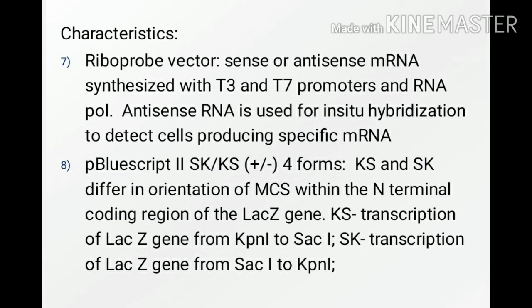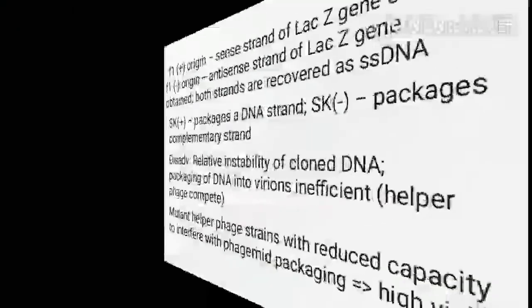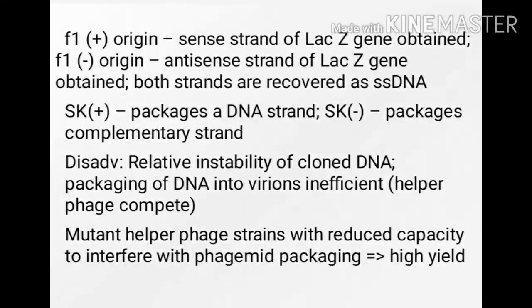P-bluescript is available in four forms. K-S and S-K forms differ in orientation of the multiple cloning site within the N-terminal coding region of the lacZ gene. K-S helps in transcription of lacZ gene from KpnI to SacI, and S-K permits transcription of lacZ gene from SacI to KpnI. The other two forms are plus and minus: with F1 plus origin, the sense strand of lacZ gene is obtained, and with F1 minus origin, the antisense strand is obtained. Both strands are recovered as single-strand DNA; if S-K plus packages a DNA strand, S-K minus packages the complementary strand.